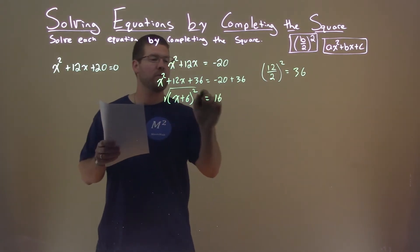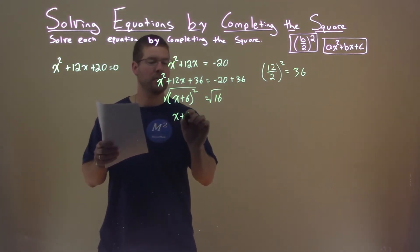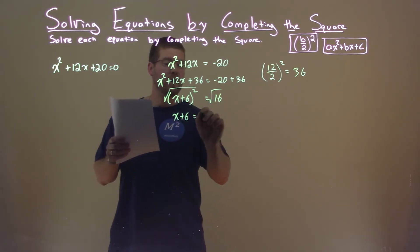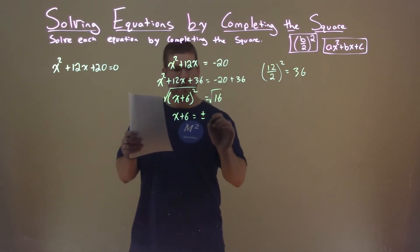We can now take the square root of both sides, gives us x plus 6 equals plus or minus the square root of 16, which is 4.